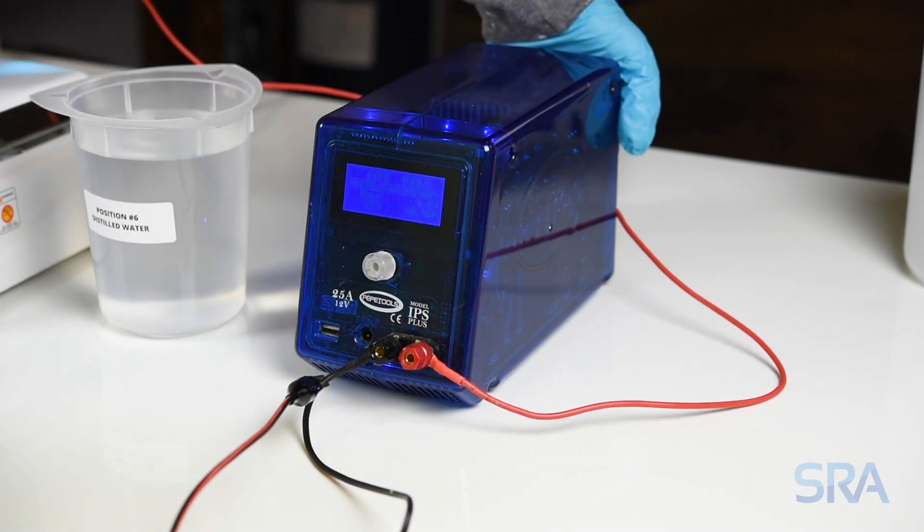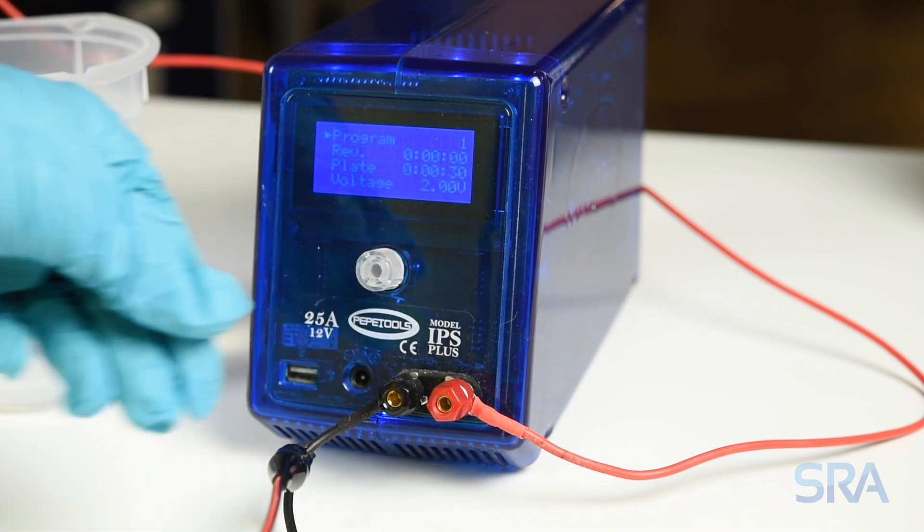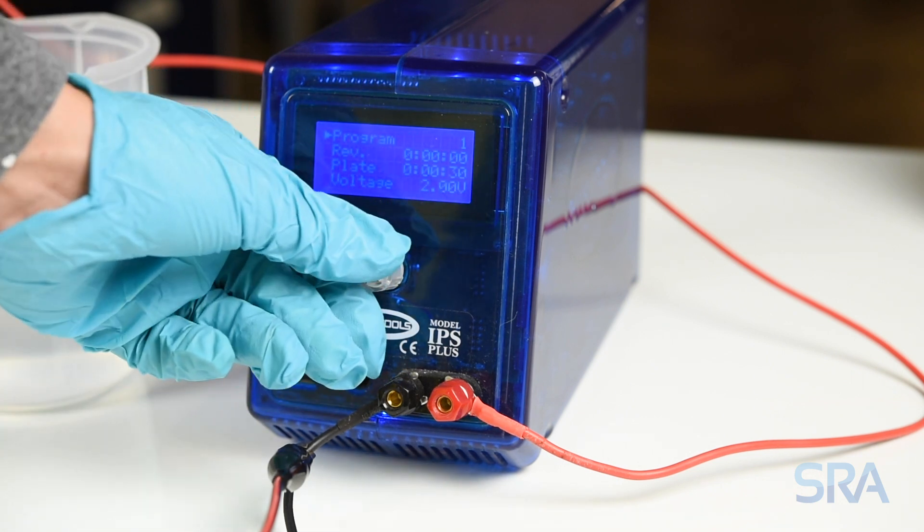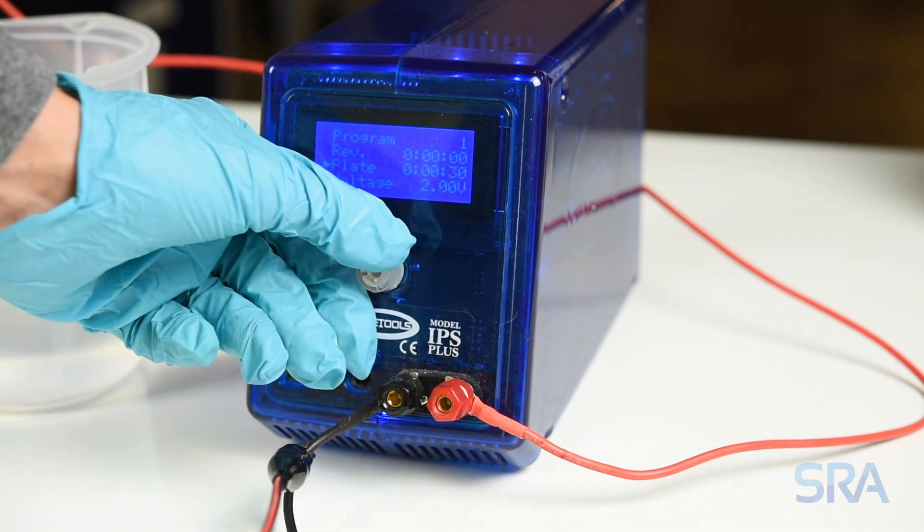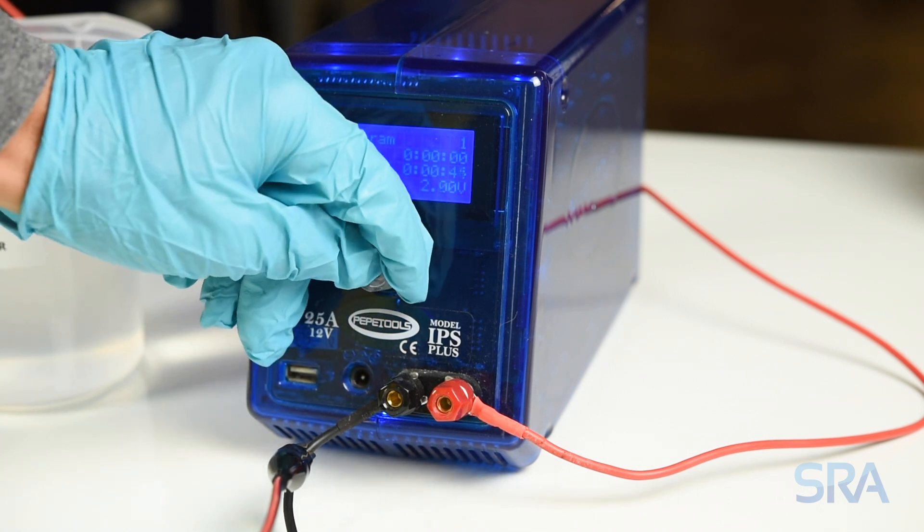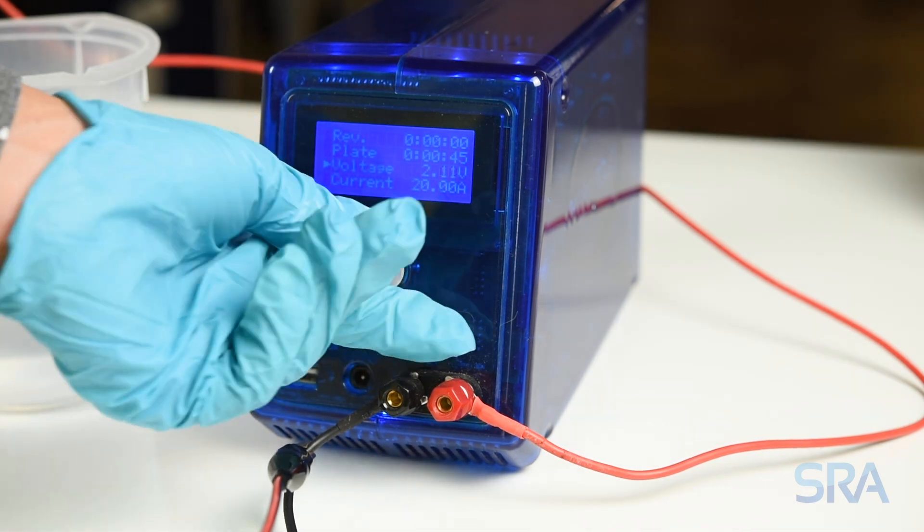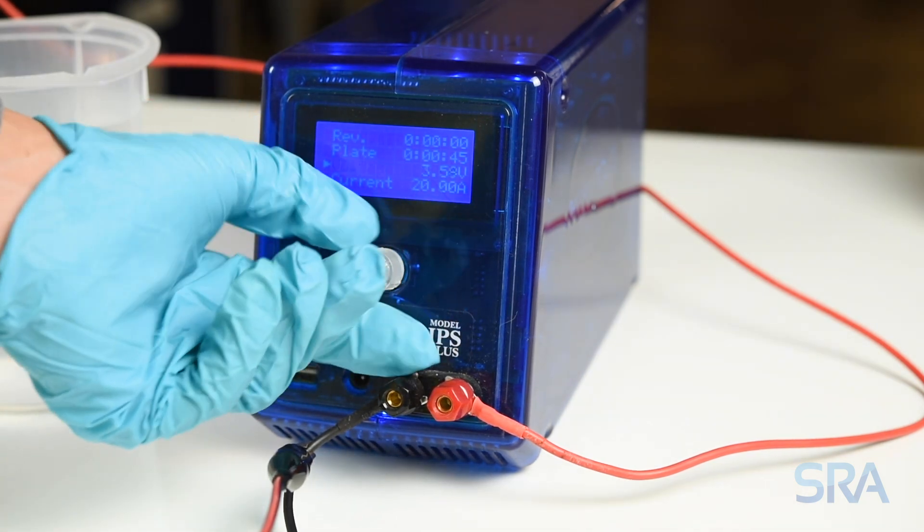Then turn on your plating rectifier and enter the program setup. For this particular rose gold solution we want the plating time to be between 30 and 45 seconds. The recommended voltage of 5 should be applied to the stainless steel anode, so let's set that now.